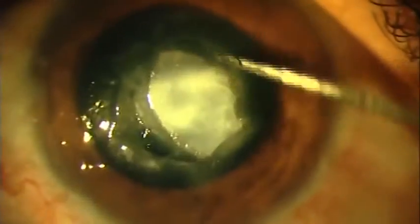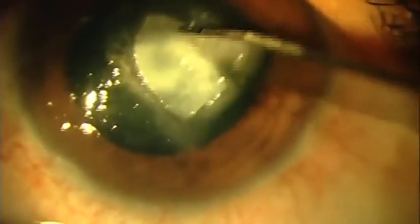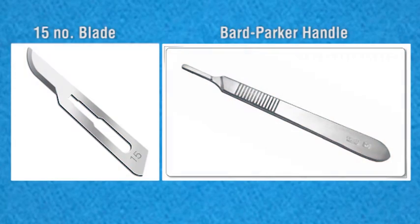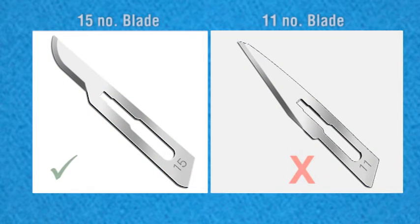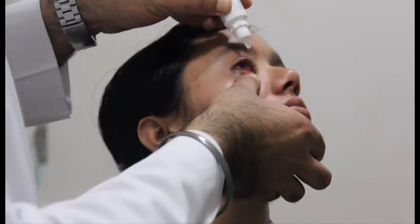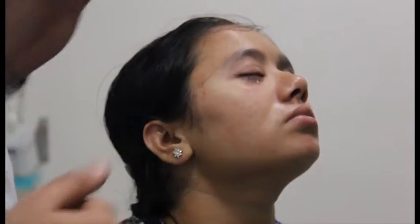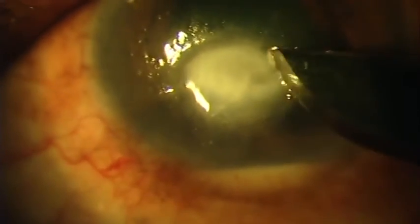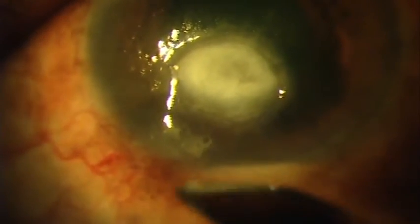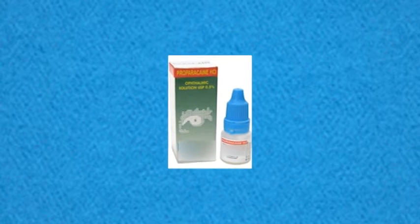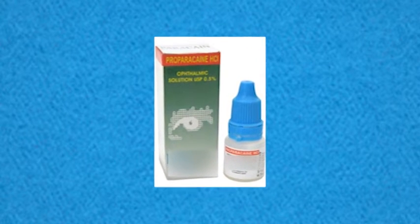Laboratory workup of corneal ulcers should be done in a deliberate and meticulous manner. Corneal ulcer is scraped using a 15 number blade attached to a Bard-Parker handle. 11 number blades should not be used for scraping as they are too sharp and may tear the cornea. Scraping is performed from the edge and base of the ulcer using topical anesthesia — 0.5% proparacaine drops.